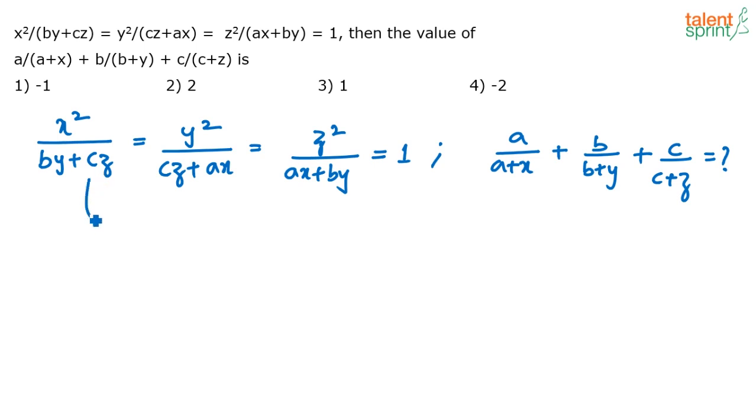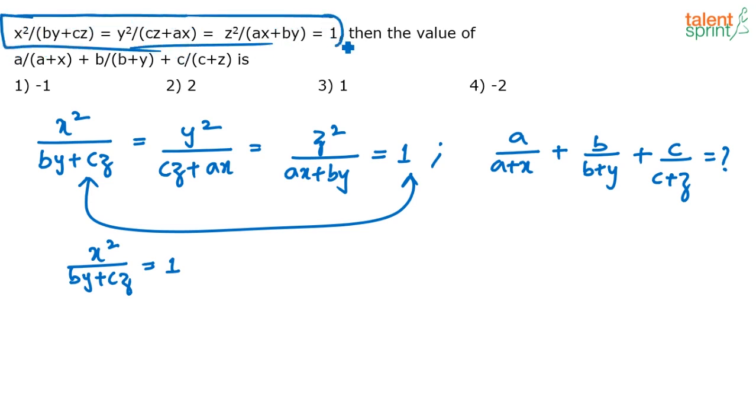See I think the only thing that you need to observe is compare these two terms. What do you observe? x squared by by plus cz equals to one. The best part here is we have been given a lengthy equation but no other conditions here. No strings attached. x, y, z, a, b, c can take any values. Until those values are satisfying these equations we don't really care about it.